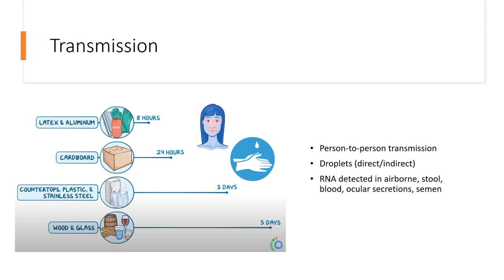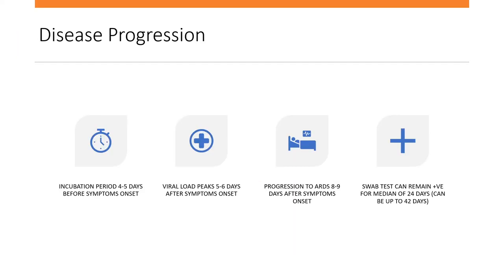The swab test we commonly perform detects RNA, and patients can choose between a nose or throat swab — or rectal swab if preferred. Once infected, the incubation period is around four to five days before symptom onset. Viral load peaks at five to six days after symptom onset, and progression to ARDS typically occurs an average of eight to nine days after symptom onset. Because people can deteriorate quickly, they require close monitoring.